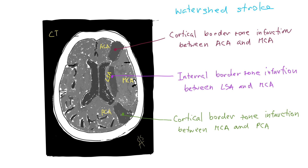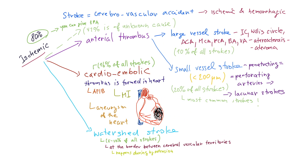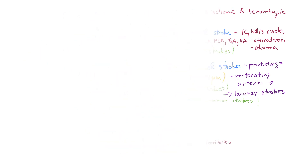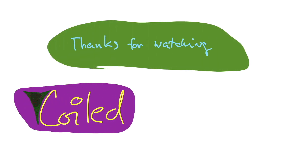Watershed infarction also occurs with carotid occlusion — there's effective hypotension downstream. It can be general hypotension in shock, or local hypotension affecting one side. If the damage is deeper, the watershed will be between, for example, the lenticulostriate arteries and the middle cerebral artery — a border of dead cells near the basal ganglia. Those are ischemic stroke types. Now let's get to hemorrhagic ones.